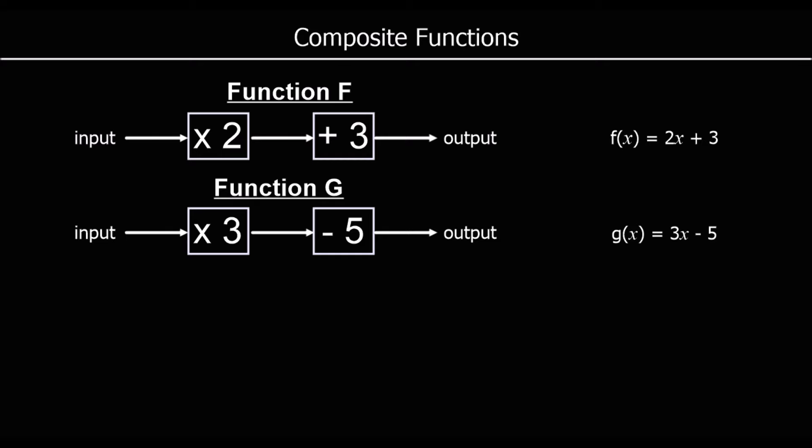Here we have two different functions. Function f takes an input, multiplies it by 2 and then adds 3 to get an output, or f of x equals 2x plus 3. And we've got a function called g which takes an input, multiplies it by 3 and then takes away 5 to get an output, or g of x equals 3x minus 5.